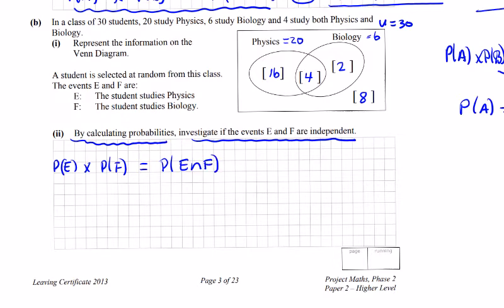So the probability of E, which is physics, is 20 over 30, or 2 over 3. The probability of F, which is biology, is 6 over 30.